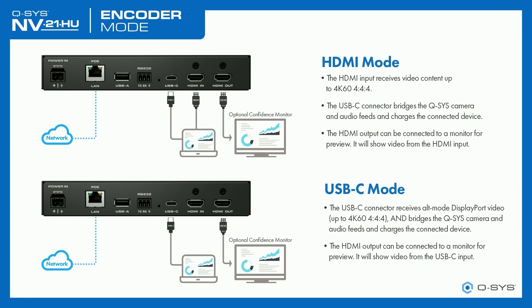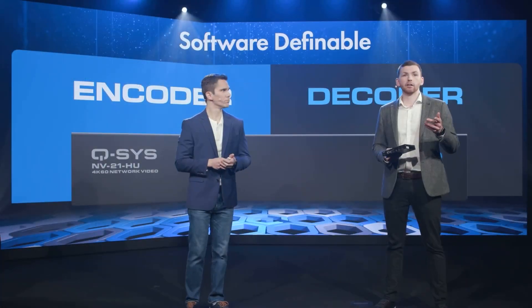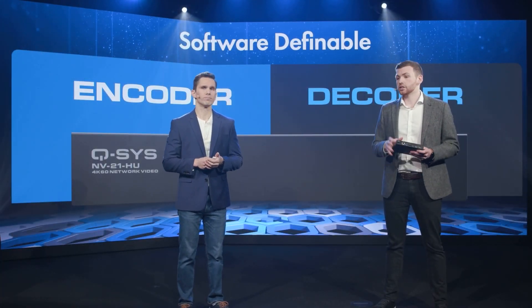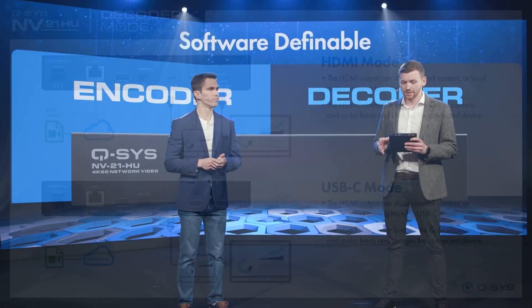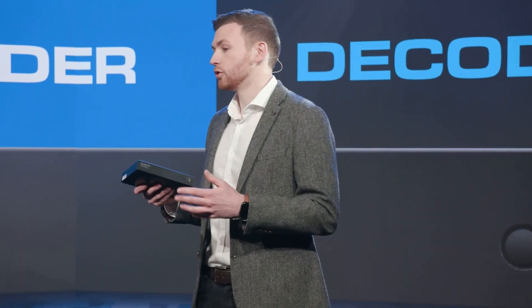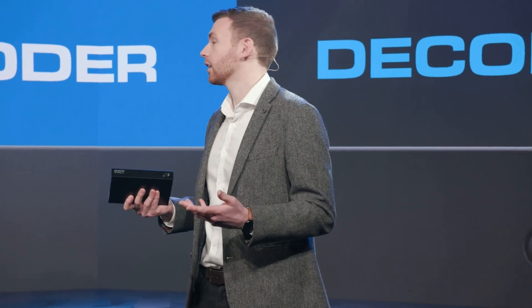In decode mode, HDMI mode means that your local HDMI is able to go to your local HDMI output, and USB mode means that USB will go to the HDMI output. And of course, in decode mode, you can always take from the network as well.